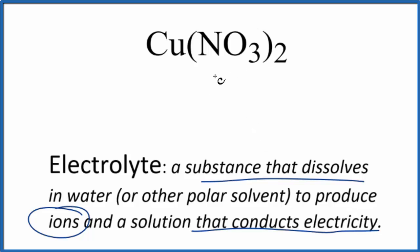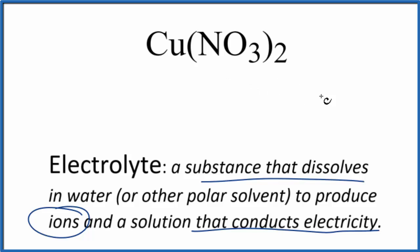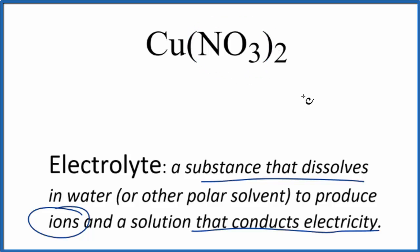For copper 2 nitrate, we note that copper is a metal and the nitrate is a group of non-metals, so this will be an ionic compound. If it dissolves — if it's soluble — it could produce ions. If you know your solubility rules, nitrates (NO₃) are very soluble, so this will dissolve and dissociate into its ions.